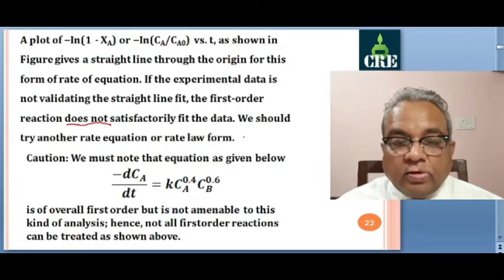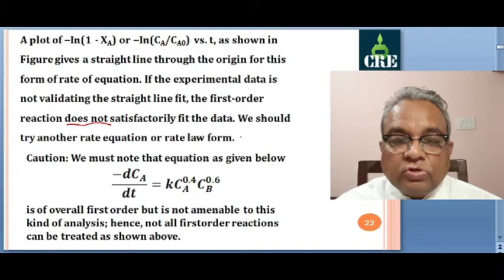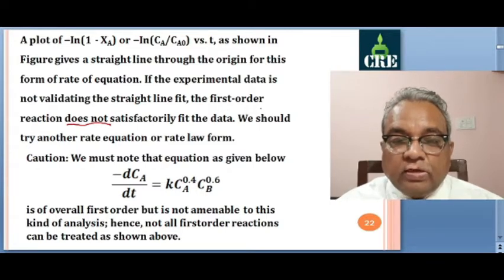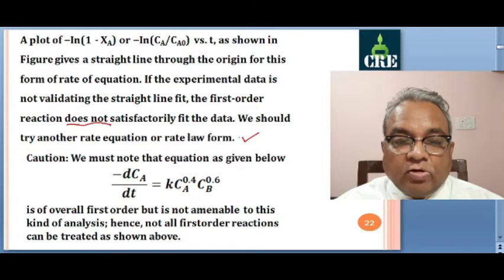We are studying the integral method of analysis of the concentration-time data. In the integral method of analysis, we have to follow the trial and error procedure. Here I have assumed that my data may be evaluated with a first order rate expression. We have used the integrated form of the first order rate law and plotted accordingly. If my data is not fitting well, if there is a lot of scatter, then I reject this equation.